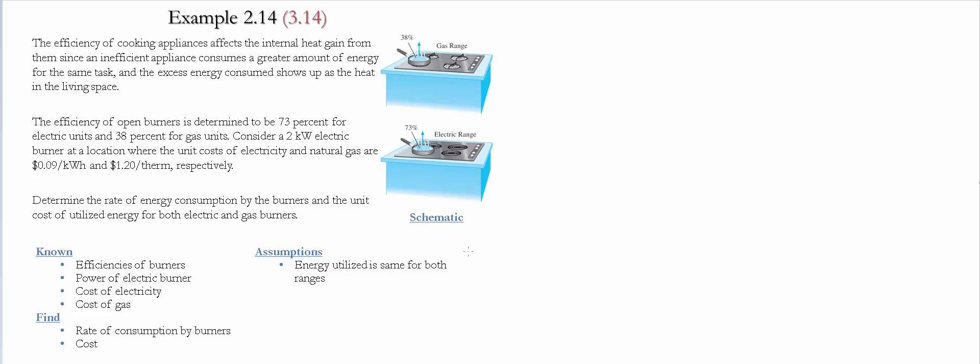We need to determine the rate of energy consumption by the burners and the unit cost of utilized energy for both electrical and gas burners. Here's a list of the known quantities for the problem and what we need to find. For the assumptions, we're going to assume that the energy utilized is the same for both ranges.